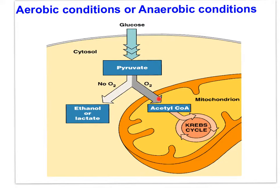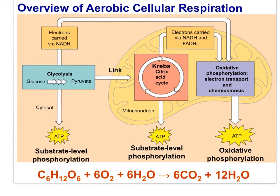Recall that when oxygen is present, pyruvate moves into the mitochondrion. In the electron transport system, oxygen plays a very important role. Also recall that with the end of the Krebs cycle, all of the carbon dioxide has been formed and released as waste. All the energy for ATP production in the electron transport system resides in NADH and FADH2.